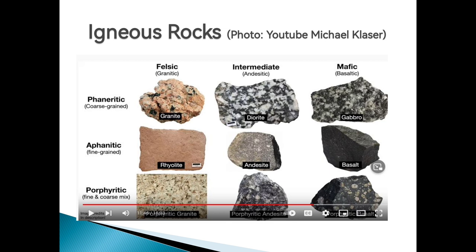Rhyolite is fine-grained, then we have andesite, which is a little bit darker than rhyolite, and then we have basalt, which is very, very dark. We also have granite, andesite, and basalt in porphyritic form — a combination of fine and coarse mix. These are samples of igneous rocks: granite, diorite, and different kinds of rhyolite depending on the mineral composition.